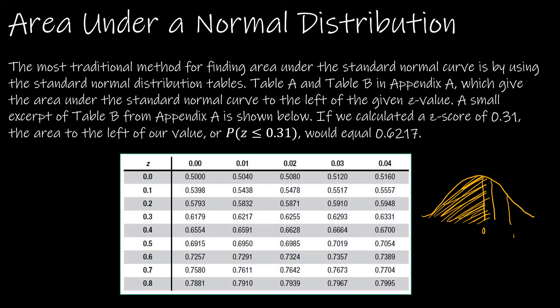I'm not going to focus on the table since we're focusing on Excel, but just so you can see what I would do: for 0.31, I would find 0.3 in one axis and 0.01 in the other, because 0.3 plus 0.01 equals 0.31. Where those two intersect gives the area to the left — the table always gives area to the left. The correct solution is 0.6217.